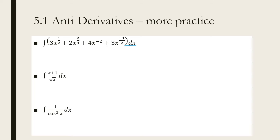The process is: if you have x to some exponent, you are going to add one to that exponent and then put that new exponent on the bottom as a denominator. That's all there is to it.